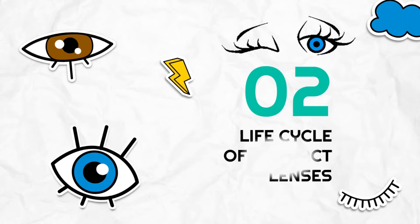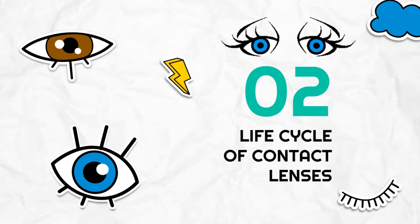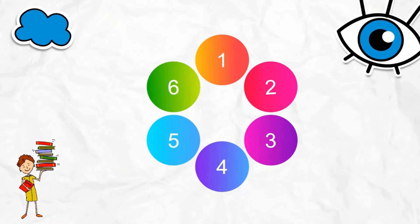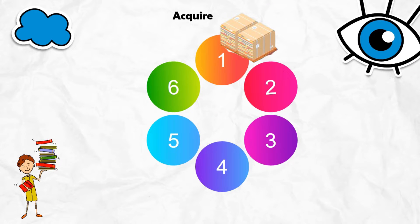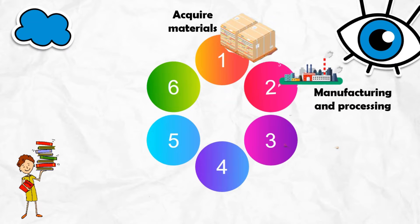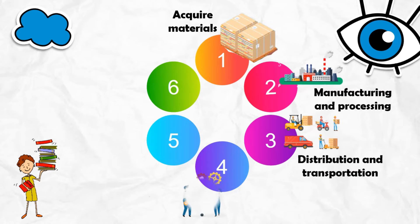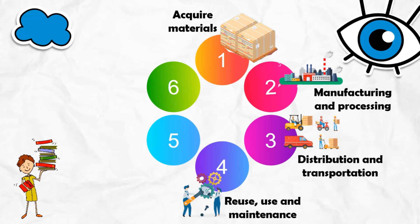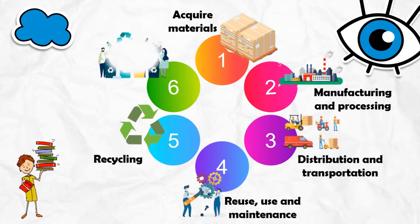The life cycle of contact lenses has six stages. Firstly, it starts with acquiring materials. Secondly, manufacturing and processing. Thirdly, distribution and transportation. Fourthly, reuse, use, and maintenance. Fifthly, recycling, and lastly, waste management.